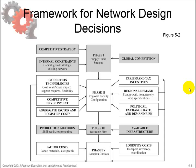For phase 2, several inputs are required: production technologies, the competitive environment, aggregate factor and logistics costs, tariffs and tax incentives, regional demand, and political, exchange rate, and demand risk — as covered in a previous video.